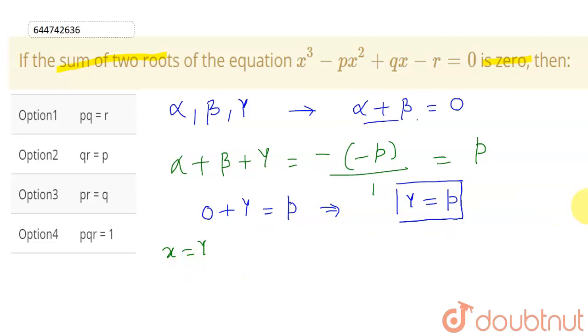Let me do that. So if I put x equal to gamma here, this will give me gamma cube minus p gamma square plus q gamma minus r equal to zero.